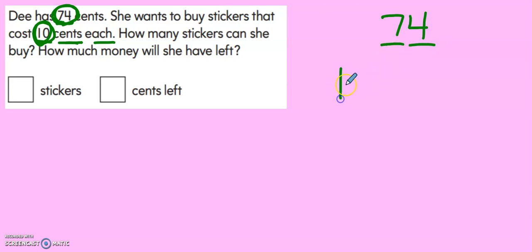Let's draw out the number. 10, 20, 30, 40, 50, 60, 70, 71, 72, 73, 74. Let's count how many groups of 10 she has. 1, 2, 3, 4, 5, 6, 7.